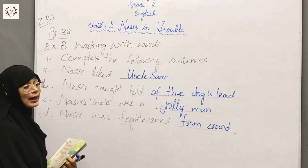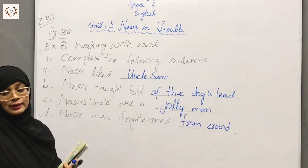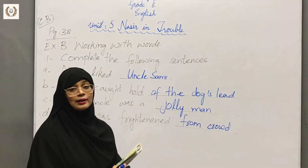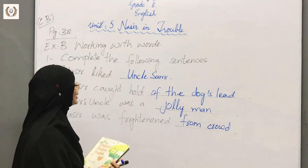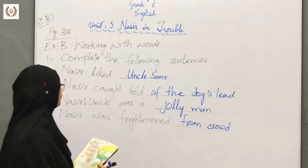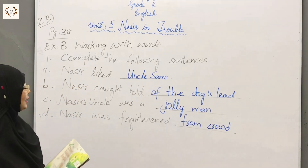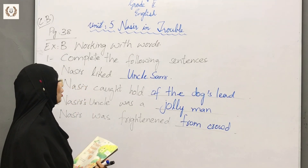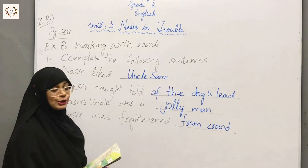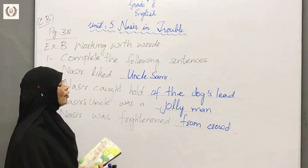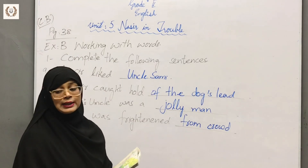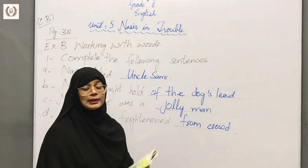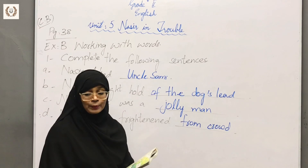So, sentence A: Nasil liked Uncle Sami. Sentence B: Nasil caught hold of the dog's lead. Nasil kis ko pakda? Nasil kutte ki rasi ko pakdi.